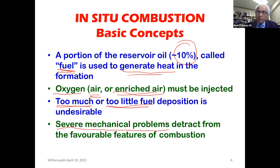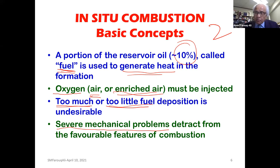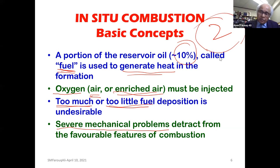The most important issue for combustion is that severe mechanical problems detract from its favorable features. Right now, there are exactly two major in-situ combustion projects in the world: one in Romania — Sapla Kudu de Barcao — and one in India. I'm from India and worked on the early stages of that project in 1991-92. These two projects have been going on for many years and are primarily government-supported, producing perhaps 10,000 to 12,000 barrels each. By comparison, there are several hundred steam projects.